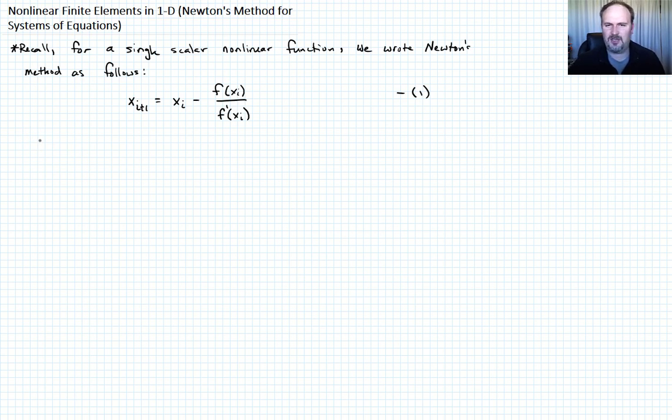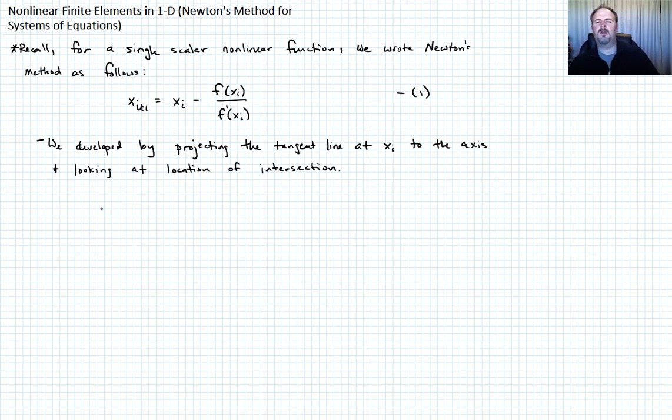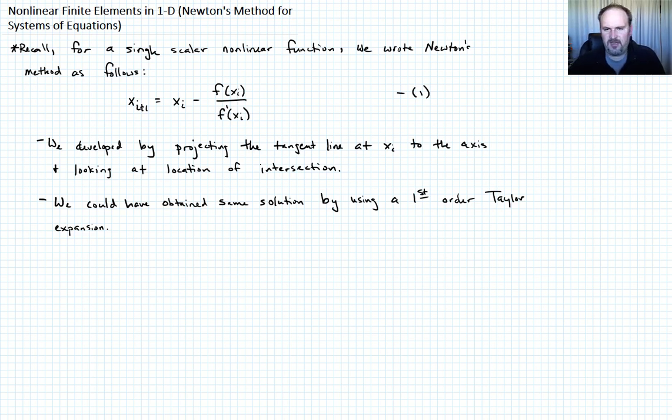This is, we developed this by projecting the tangent line at X sub i to the axis and looking for the intersection or at the location of intersection. But we could have taken a different approach. We could have obtained this result formally by considering a first-order Taylor series expansion. So we could have obtained the same solution by using a first-order Taylor expansion.